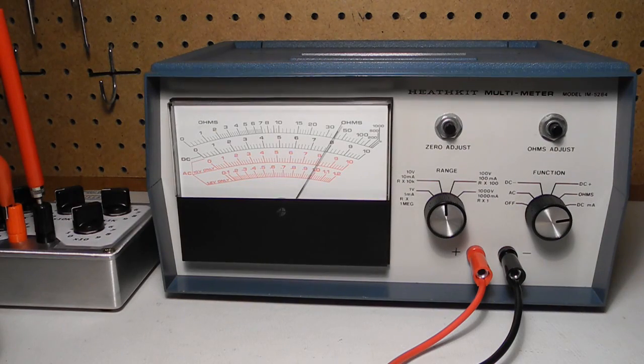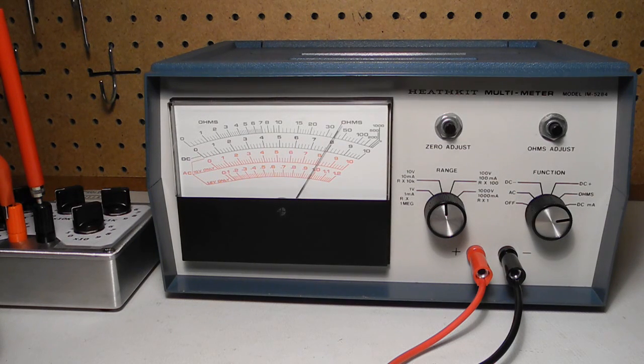Now I'm measuring DC current using a power supply and resistance decade box set to 1000 ohms. With about 8 volts input, we're seeing the expected 8 milliamps. It can measure up to 1000 milliamps or 1 amp.